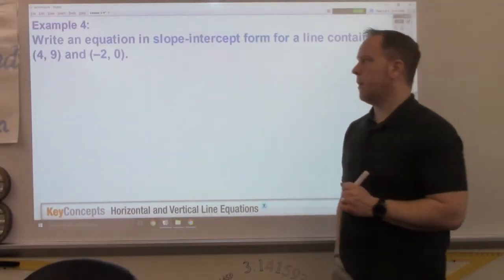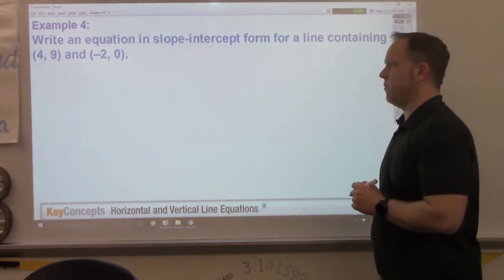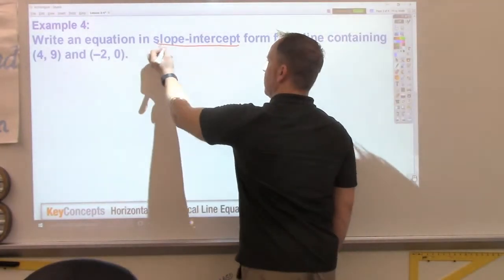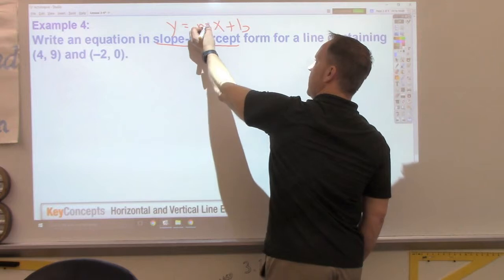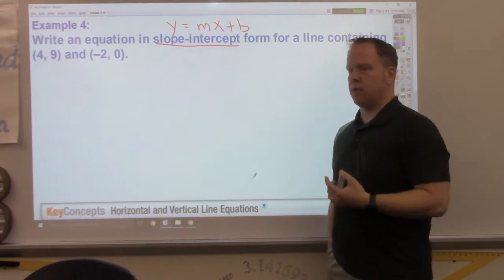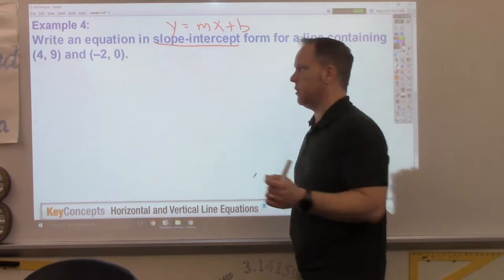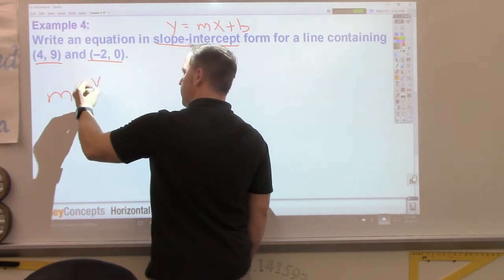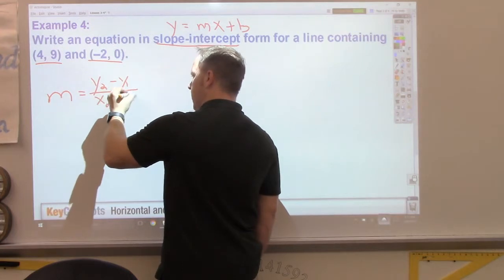Occasionally, we'll get problems like this. Write the equation in slope-intercept form for a line contained 4, 9, and negative 2, 0. Notice they want slope-intercept form. y equals mx plus b. I don't have a slope, nor do I have a y-intercept at this point. But, from the other lesson, we learned how to calculate slope using two points.